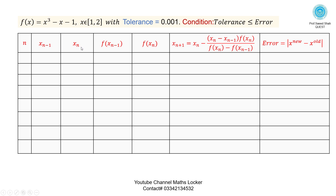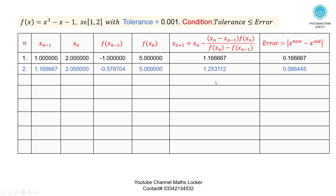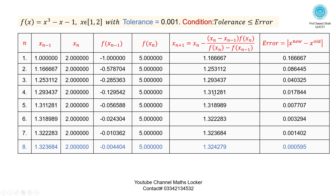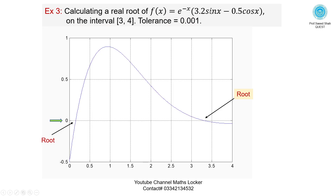Set up columns for x_{n-1}, x_n, x_{n+1}, and error. First iteration: check the condition — tolerance is less than error. Second iteration: check the condition — tolerance less than error. Third iteration: check tolerance. Taking the eighth iteration, this condition is false: 0.001 is not less than 0.00595. Therefore the root is found at n = 8: x = 1.324279.